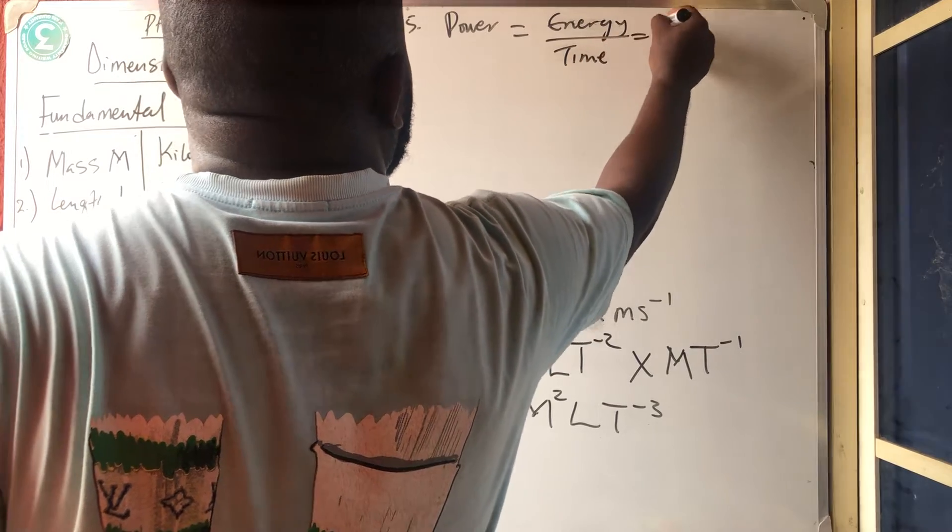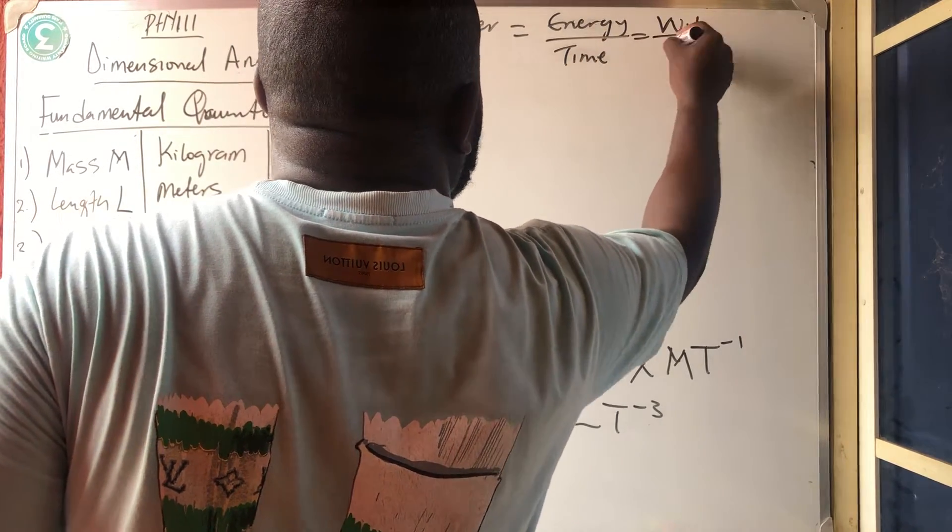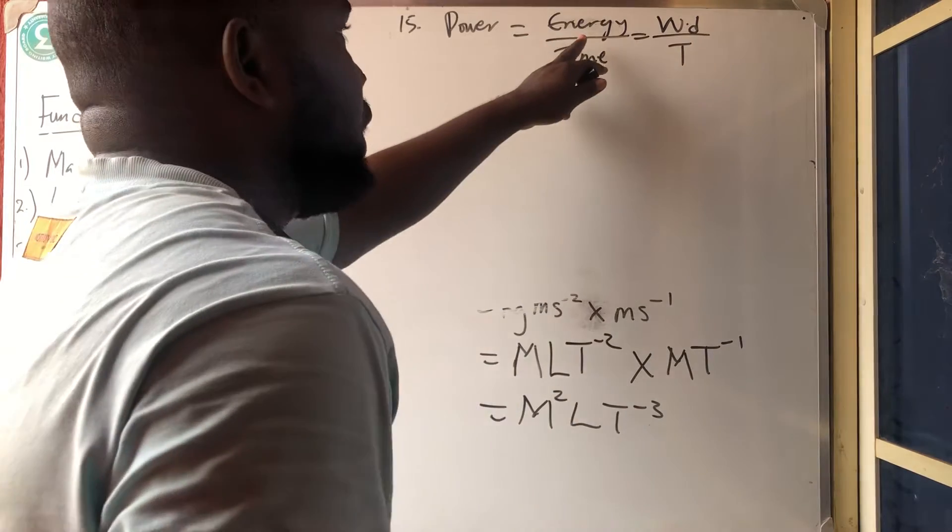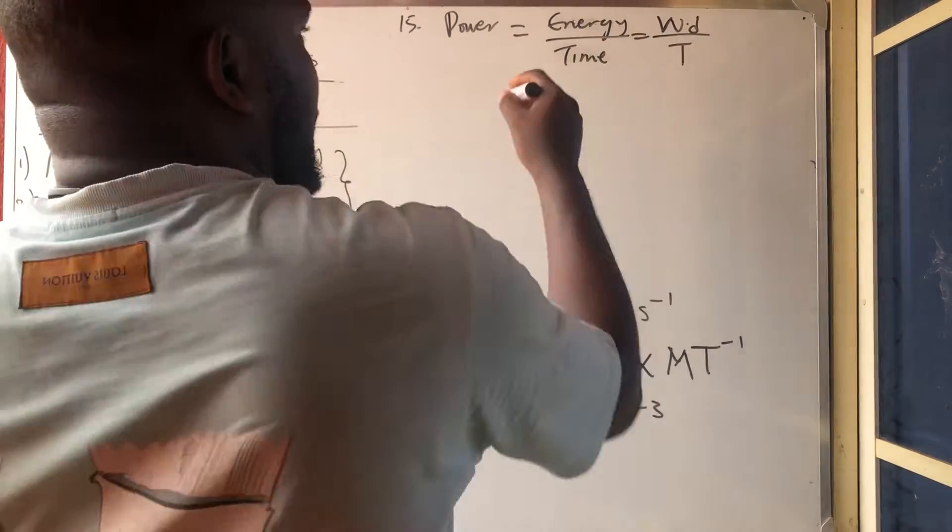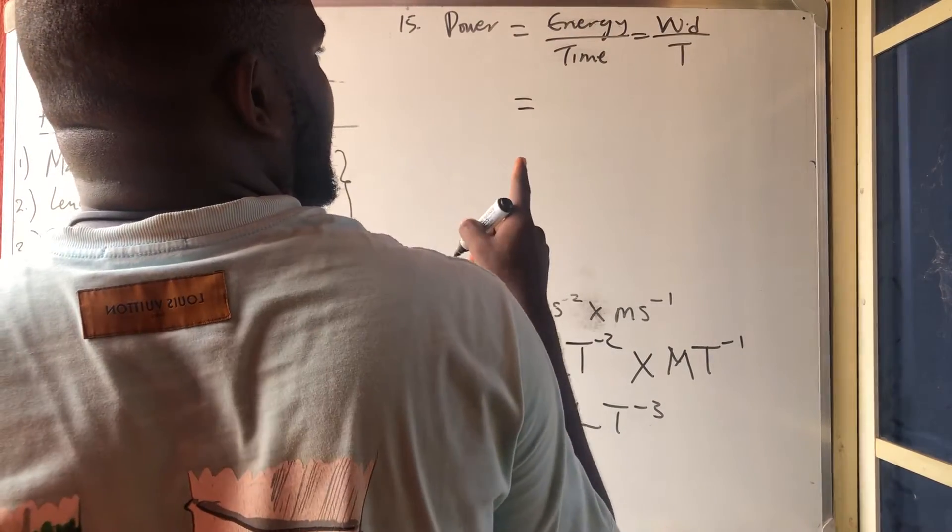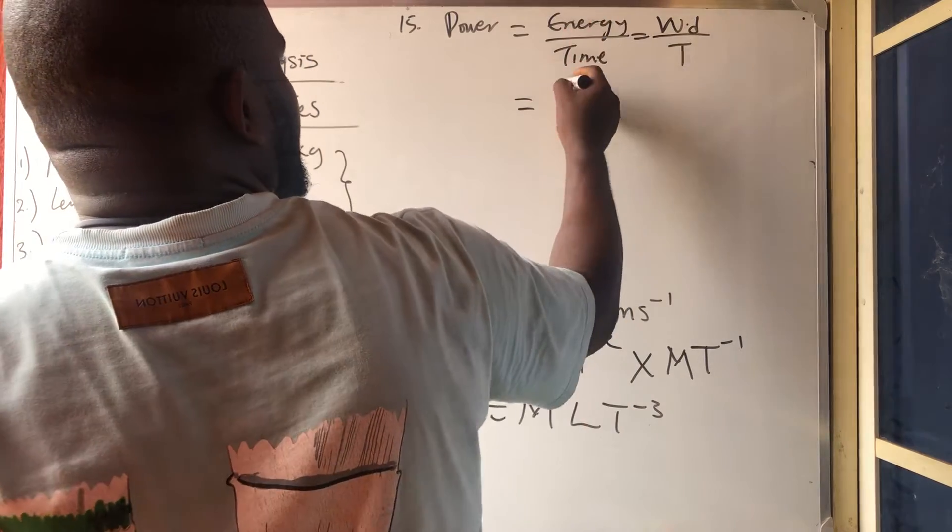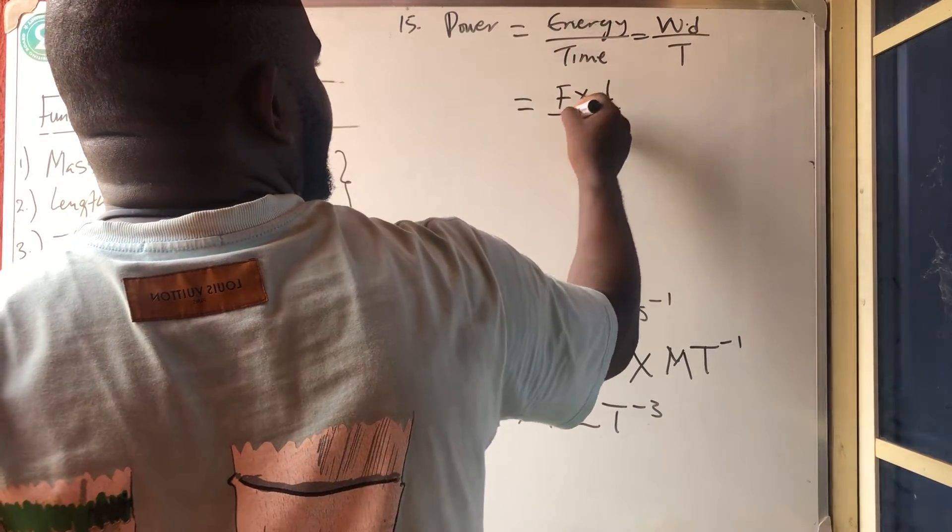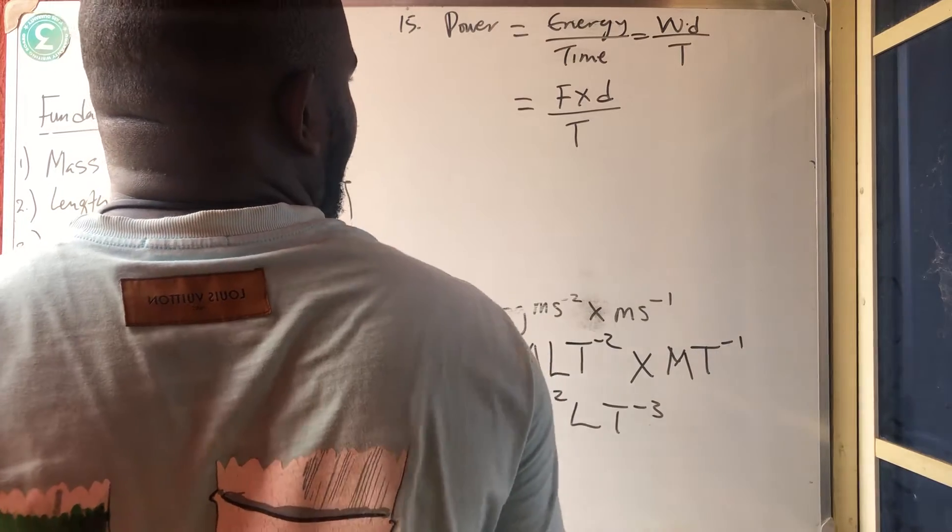And energy center has worked on. Walk done, please, over time. So if you don't know energy before, energy center has worked on. And what is work? Before a work will be done is what? Force times distance. So walk done is force times what? Distance all over what? Time.